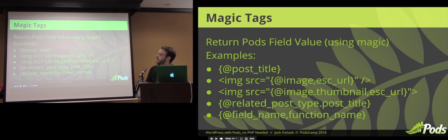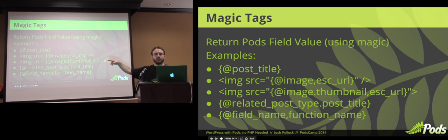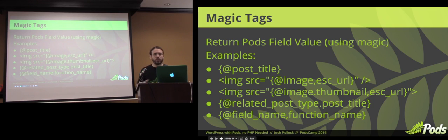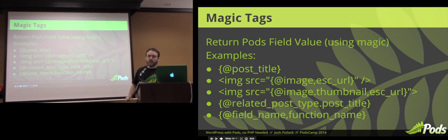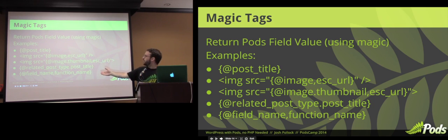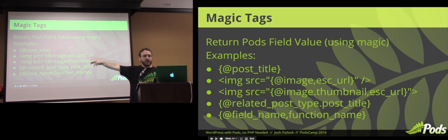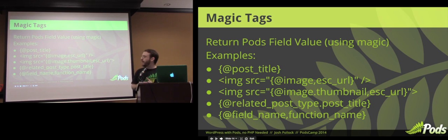Here are examples of magic tags. The first one is a post table field — not a custom field — but we're able to use those. We can use post updated on date, post content, post excerpt. They're available to us as if they were Pods fields, even though they're regular WordPress fields. This is an example of how we use our HTML markup with them. We have an image field and put it in our image tags — it's that simple. We can also do dot notation to get a subset of the image field. We can say we want the thumbnail size, the large size, or any other registered size.